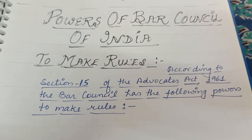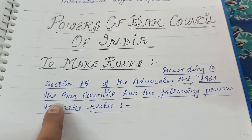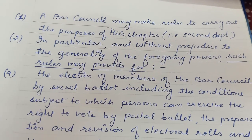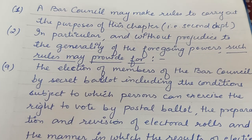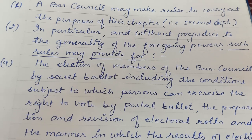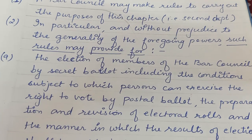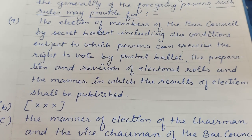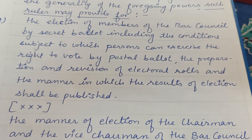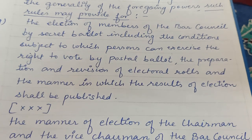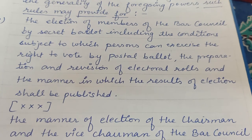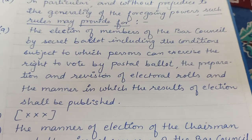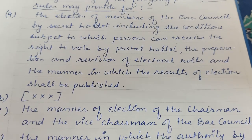Powers of Bar Council of India: sabse pehli power hai to make rules. According to Section 15 of the Advocates Act, the Bar Council of India has the power to make rules to carry out the purposes of this chapter. In particular and without prejudice to the generality of the foregoing power, such rules shall provide for: (A) the election of members of the bar council by secret ballot, including conditions subject to which persons can exercise the right to vote, preparation and revision of electoral rolls, and the manner in which results of elections shall be published.